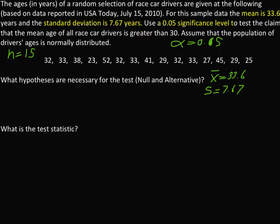Before we decide, go to the claim. This is the claim that the mean age of race car drivers is greater than 30. So we know we need H0: mu equal to 30.